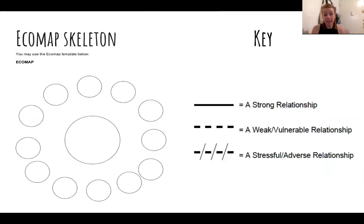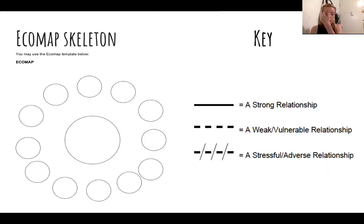Here is an ecomap skeleton — just a sample drawing of what it could look like. This is an example key, but you're welcome to make your own variation. What I like about this one is that you can use lines to show a strong relationship or a weak/vulnerable relationship. This can be really helpful when you need to identify who is a safe person for your client and who is unsafe, so you're not encouraging support from people the client identifies as unsafe or unsupportive.